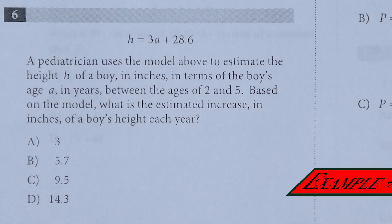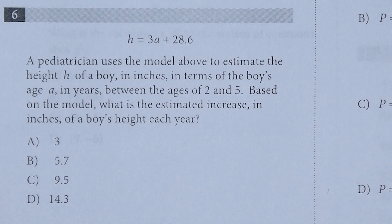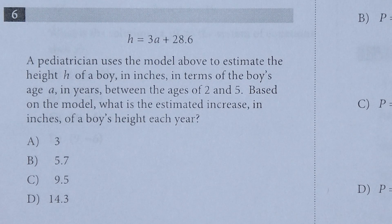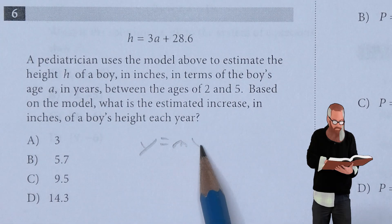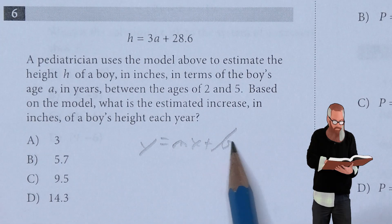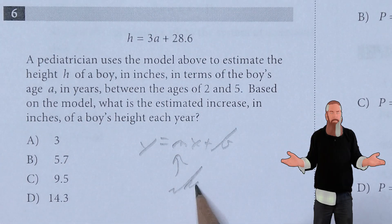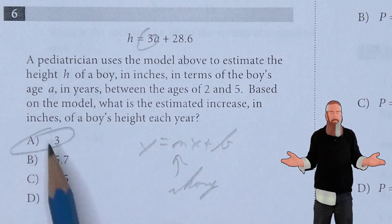A pediatrician uses the model above to estimate the height h of a boy in inches in terms of the boy's age a in years between ages 2 and 5. What is the estimated increase in inches of a boy's height each year? The key is understanding we're dealing with y equals mx plus b, where m represents the change. That means 3 represents the change, so A is the answer.